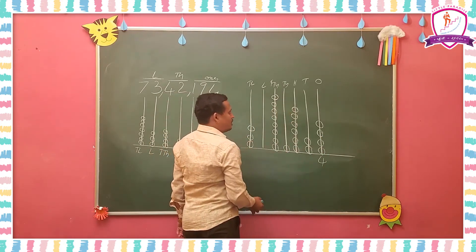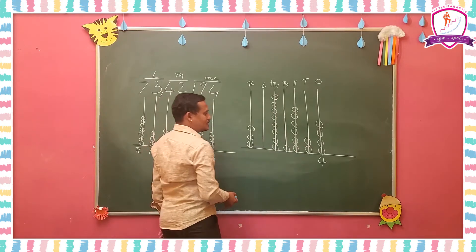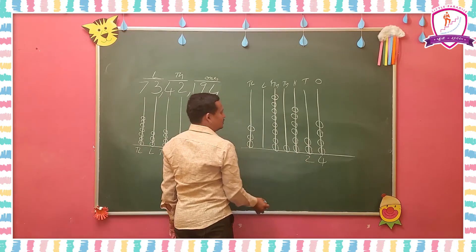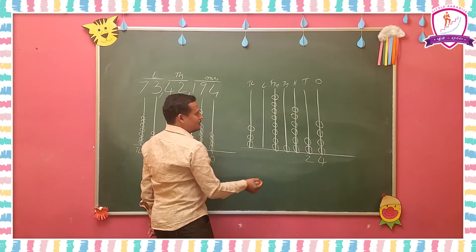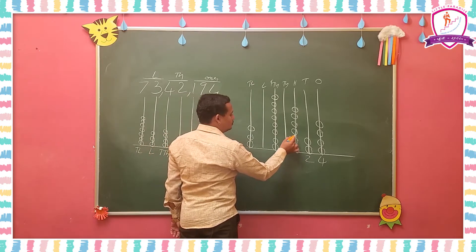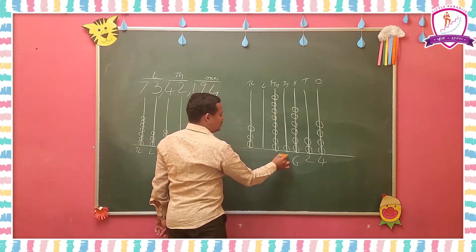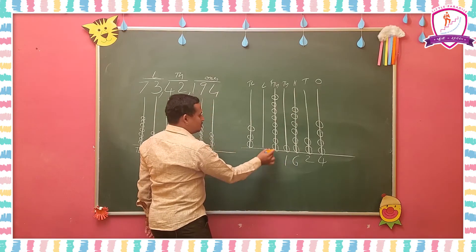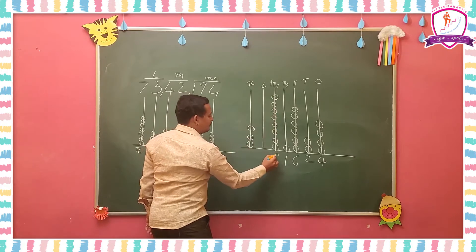Count how many bits are in the 10s place — 1, 2. There are 2 bits. How many bits are there in the 100s place? 1, 2, 3, 4, 5, 6. In the 1000s place: 1. In the 10,000s place: 1, 2, 3, 4, 5, 6, 7, 8.